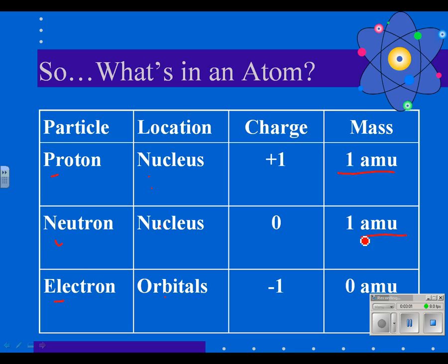Electrons basically have zero mass. They're actually one over 1,760th of a proton's mass, which means it would take 1,760 electrons to make one proton, and there is no atom that big with that many electrons. So we just call it zero.